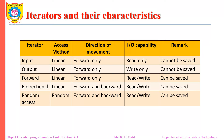Here are some of the iterators with their characteristics. We have 5 different types of iterators: input iterator, output iterator, forward iterator, bidirectional iterator, and random access iterator. All of them have linear access for the elements which are in the container. Only the random access iterator has random access.